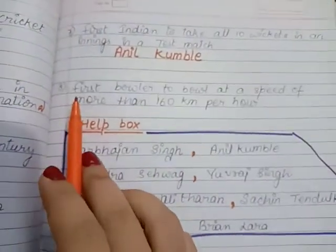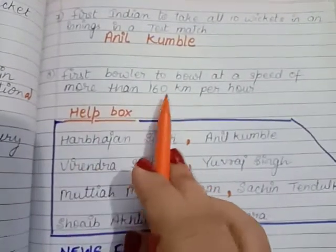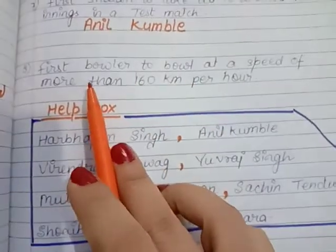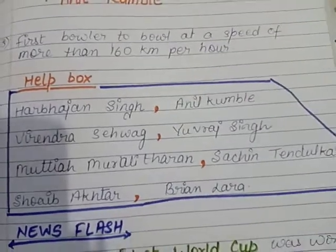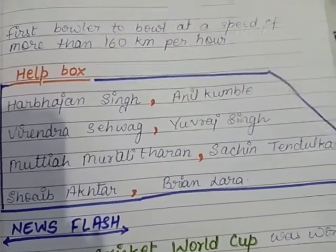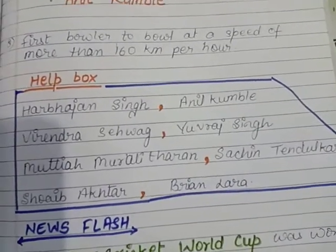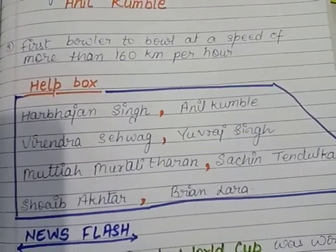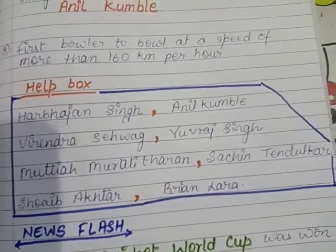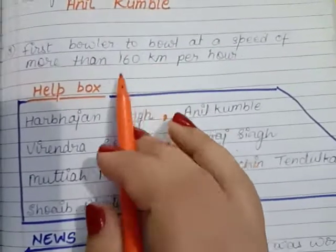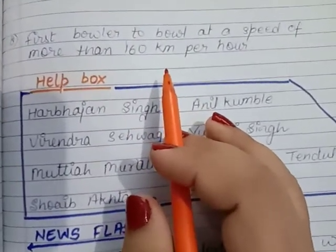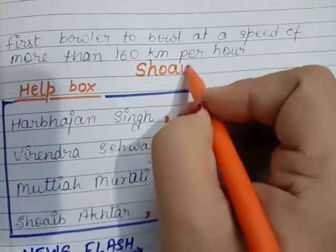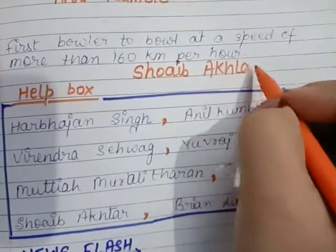Now the last question of this chapter: Who was the first bowler to bowl at a speed of more than 160 km per hour? He is the fastest bowler. Interestingly, Sachin Tendulkar — the god of Indian cricket — himself said that he always had some fear, a kind of phobia, from this bowler. And who is this very fastest bowler? He belongs to Pakistan — Shoaib Akhtar.